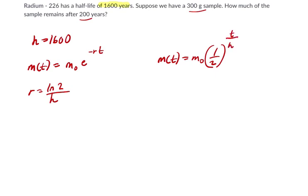So many students prefer the 1 half as a base, but both approaches work. On the left-hand side here, let's think about this. We want to know how much remains after 200 years. So M of T, that's the mass that remains, equals M sub 0, the starting mass, 300, times E to the negative R. So that's negative LN of 2 over the half-life. What's the half-life? 1,600 years.